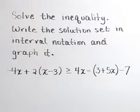Solve the inequality. Write the solution set in interval notation and graph it. Negative 4x plus 2 times in parentheses x minus 3 is greater than or equal to 4x minus in parentheses 3 plus 5x minus the number 7.